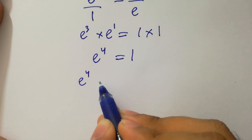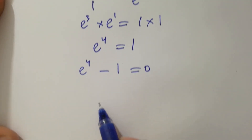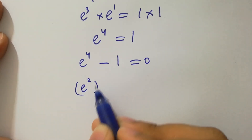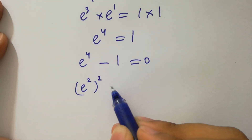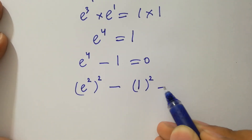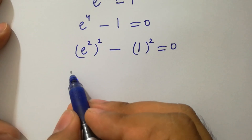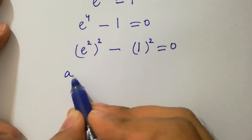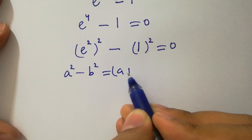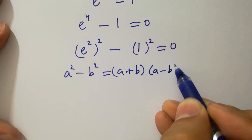This gives e to the power 4 minus 1 equals 0, which is the same as e squared to the whole power 2 minus 1 squared equals 0. We apply the formula a squared minus b squared equals a plus b times a minus b.